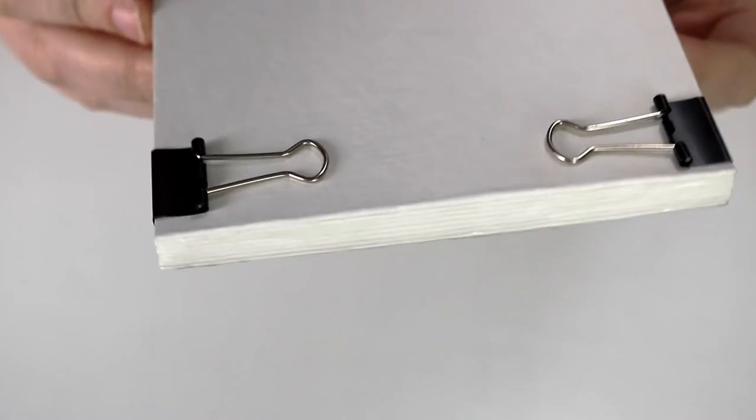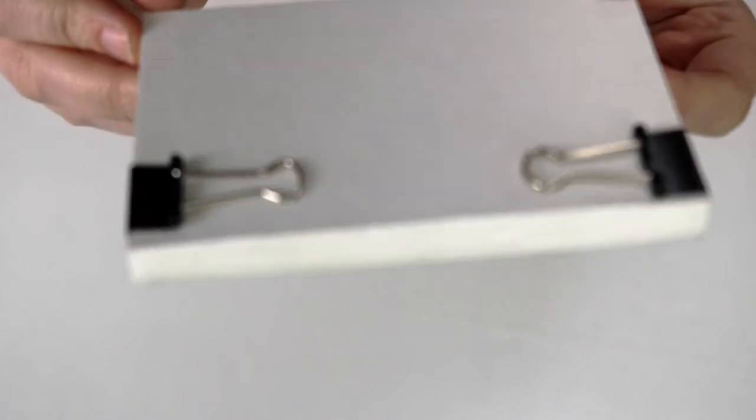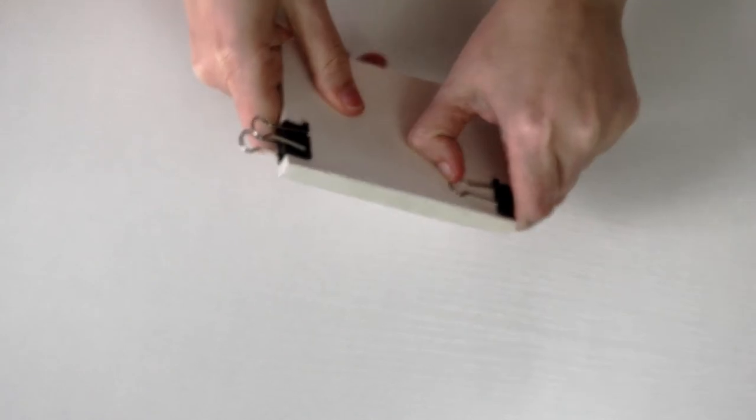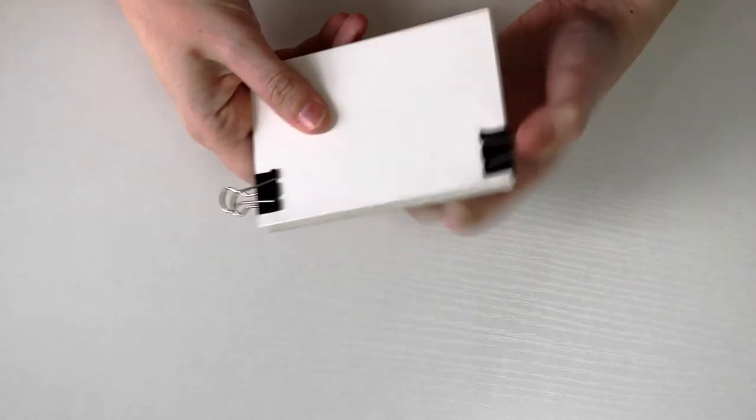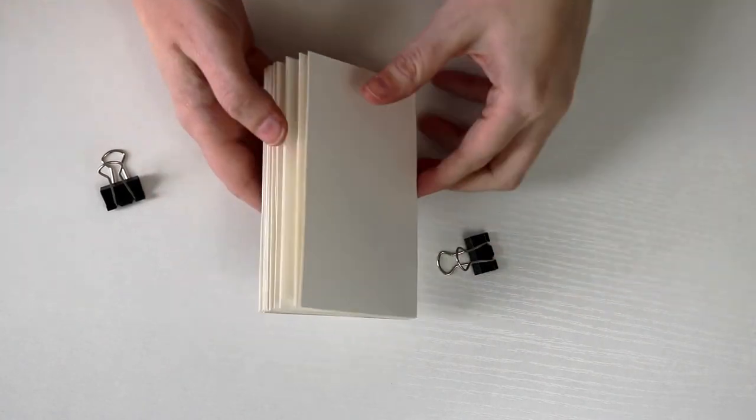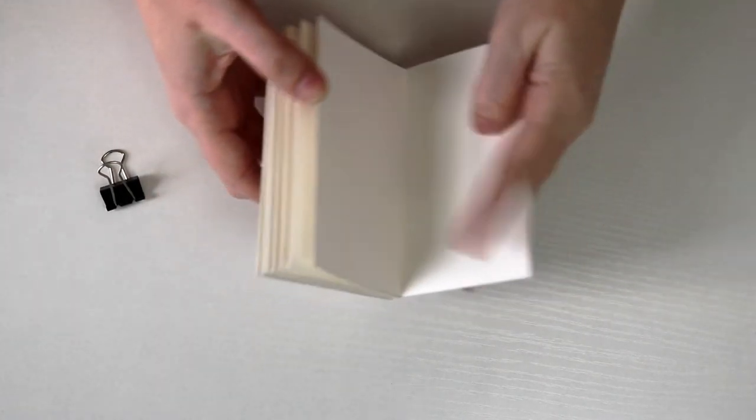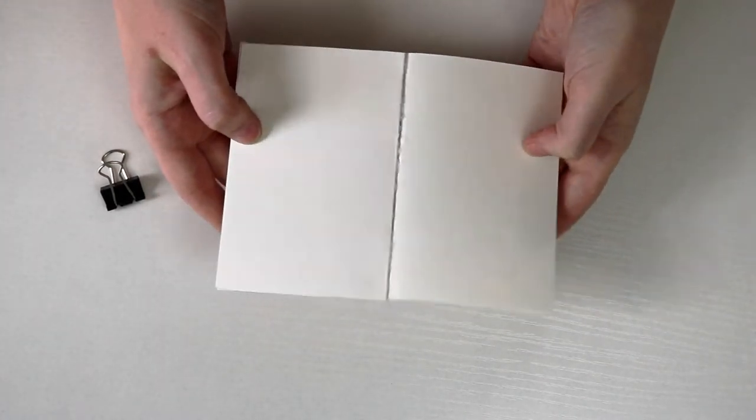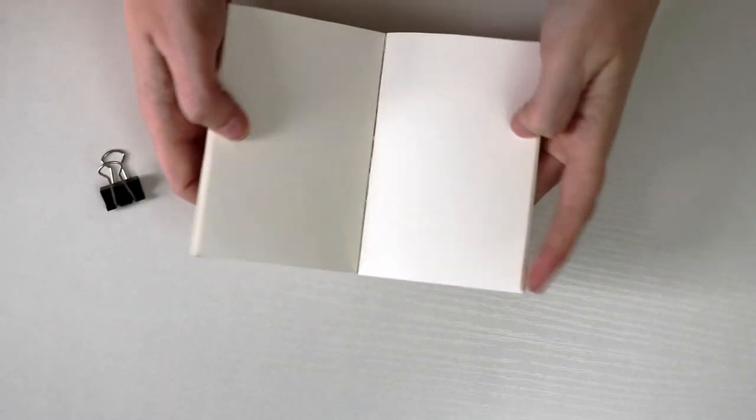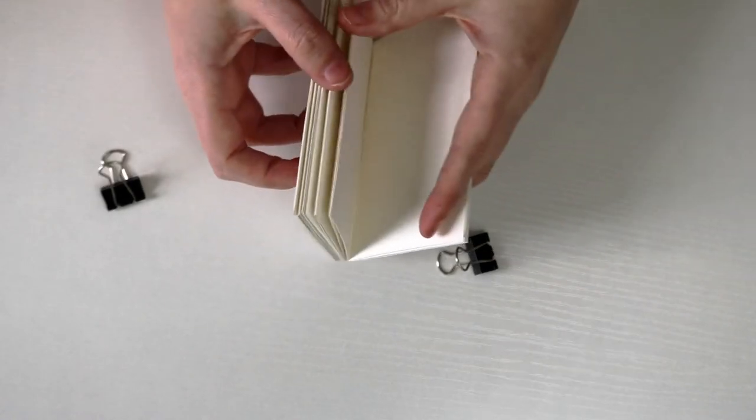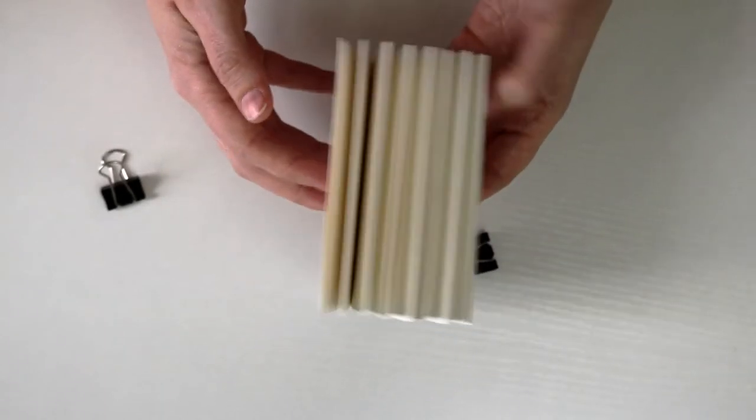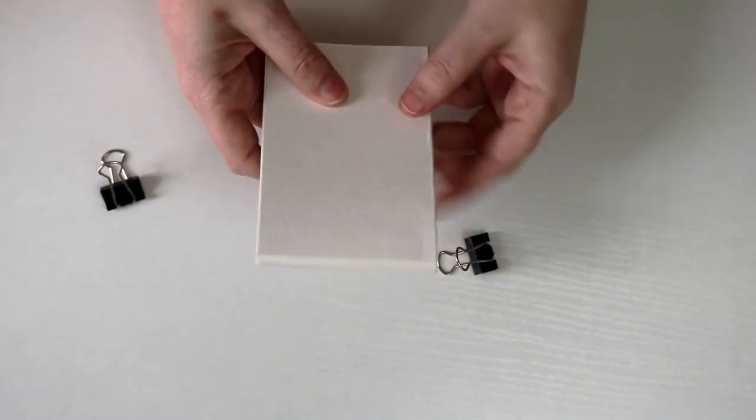So here is all our pages glued together and dry. So now I'm going to take the clips off and just open up the pages to make sure that they can open without breaking off. If they do break off then you'll want to clip them back together and do another layer of glue. So this looks like it's all ready to put a cover on.